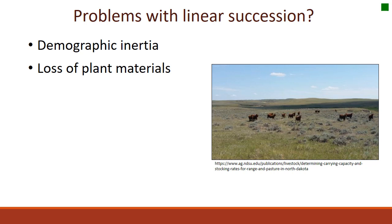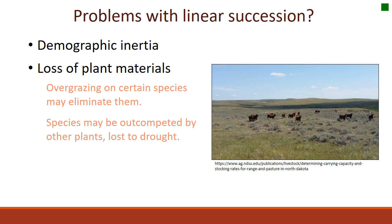Another thing to consider is that sometimes we have loss of plant materials. For example, overgrazing on a certain species might eliminate it — which can be beneficial or detrimental to the ecosystem. Targeted grazing on weed species, for instance, is great for overall ecological health. Species might also be outcompeted by other plants or lost in a drought, all of which influences the linear progression of succession.